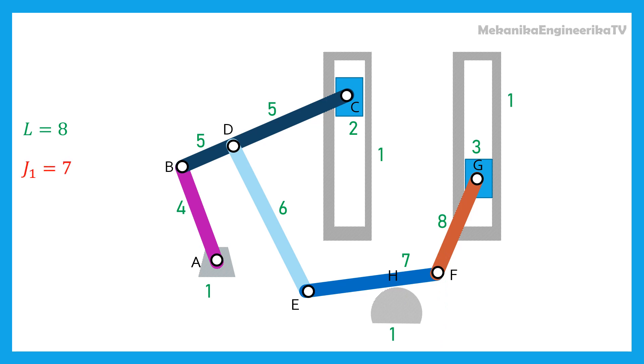There are 7 pin or rotating joints of simple order: pin A, pin B, pin C, pin D, pin E, pin F, and pin G.